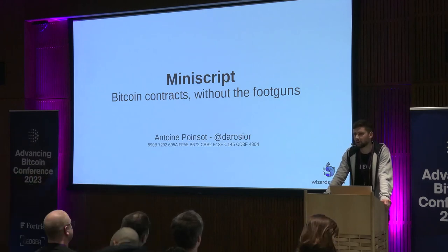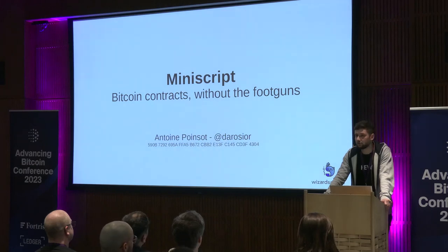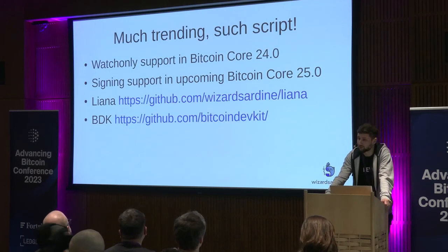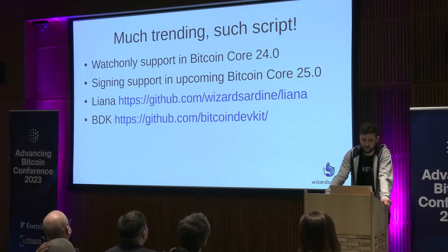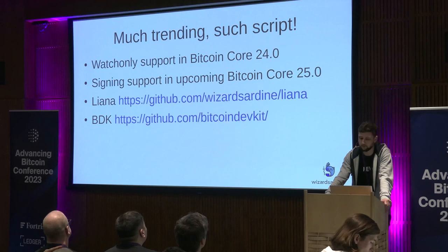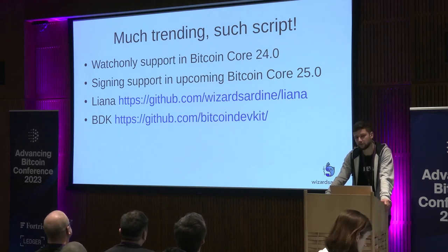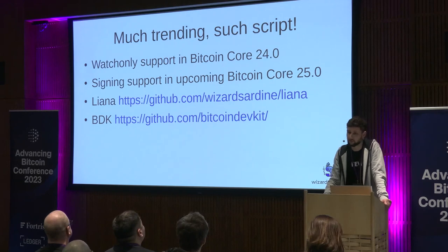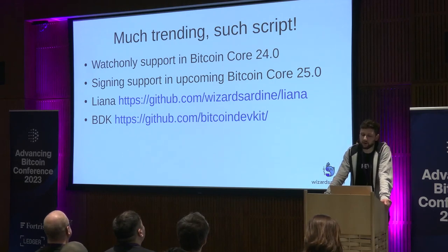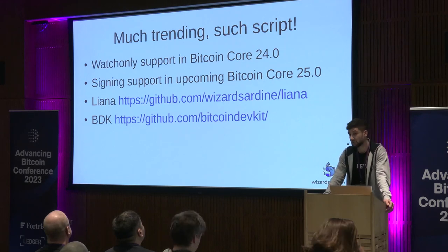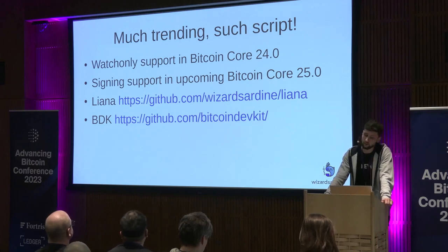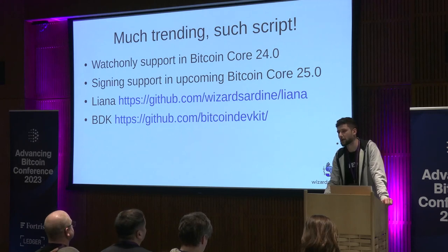Liana, on the other hand, is a pretty simple Bitcoin wallet that allows you to use advanced recovery features thanks to miniscript as well. Miniscript is finally trending, so that's cool. The watch-only support was released in Bitcoin Core 24.0, and the signing support was merged in Bitcoin Core master and is probably going to be released in 25.0. You can experiment with miniscript using the Bitcoin Core wallet now, and also with Liana, which internally uses the Bitcoin Core wallet. You can also use the BDK library if you want to experiment with miniscript from code.